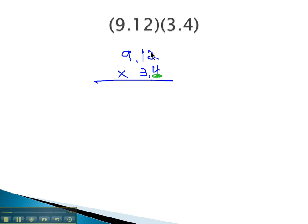Multiplying 4 by everything: 4 times 2 is 8, 4 times 1 is 4, 4 times 9 is 36. Then we use a 0 for a placeholder and multiply 3 by everything. 3 times 2 is 6, 3 times 1 is 3, and 3 times 9 is 27.